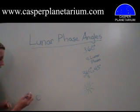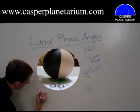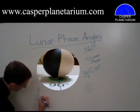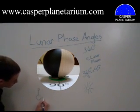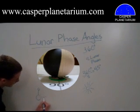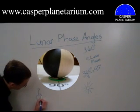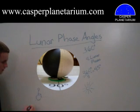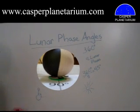That's when we get to 90 degrees. The moon is right here — here's the line connecting the Earth and the moon, and here are the light rays from the sun, and that is a 90 degree angle. And what we get then is a first quarter.